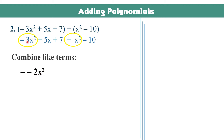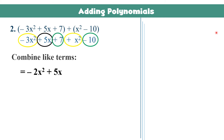We got negative 2x squared because we copied the sign from the larger number, which is 3. Then we have 5x — looking for another term with variable x, there is none, so we just bring down 5x. For the constant terms, positive 7 and negative 10 have different signs: 10 minus 7 gives 3, and the answer is negative 3. So the answer is negative 2x squared plus 5x minus 3.